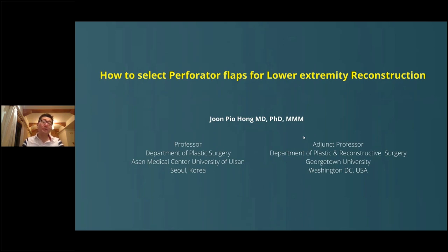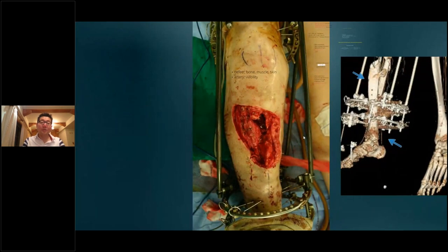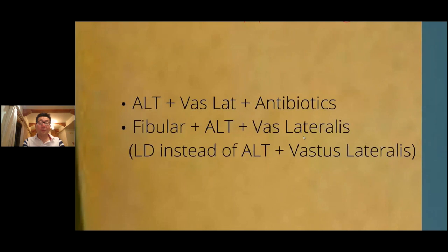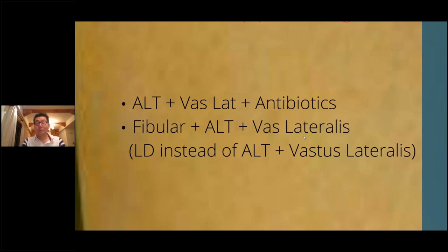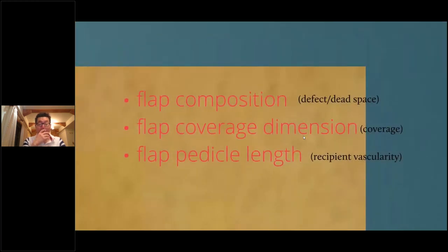Today I'd like to talk about how we select a perforator flap for various defects and what is our thinking algorithm or thinking mindset. Going back to this defect again with bone, muscle, and skin defect — we could use ALT with vastus lateralis and antibiotic beads, take a fibula if it's clean with ALT and vastus lateralis, or do an LD instead of vastus lateralis and just cover it with bone grafts. There are multiple choices to think about.